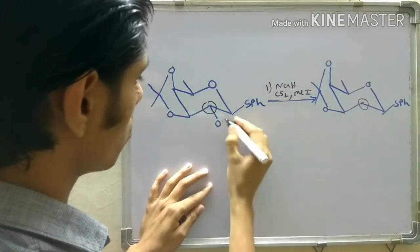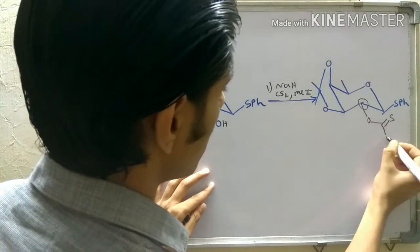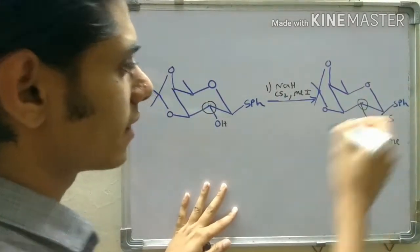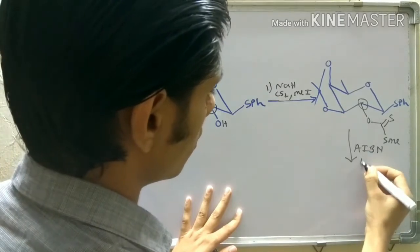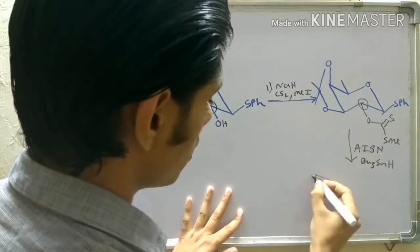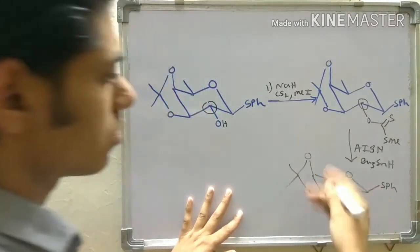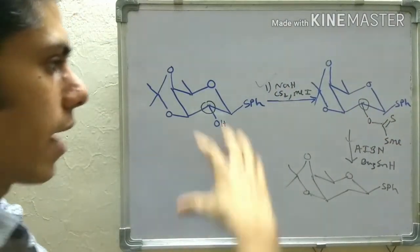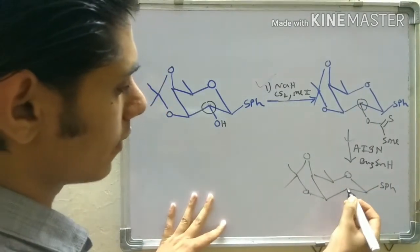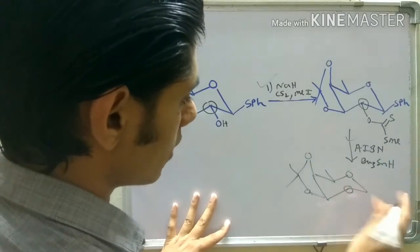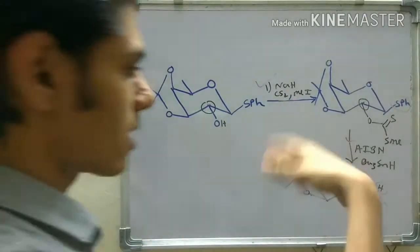By step one you get the xanthate ester — the O-C(=S)-S-Me group. In step two, when you treat this xanthate ester with AIBN and tributyltin hydride (Bu₃SnH), you reduce this center and get the deoxygenated product. These two reaction conditions together constitute the Barton-McCombie reaction. There was also a problem with our substrate at this stage — this center was deoxygenated as expected, but another center was also unintentionally deoxygenated, losing the SPh group.